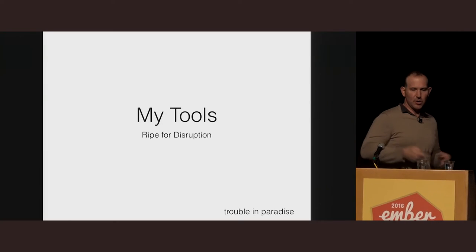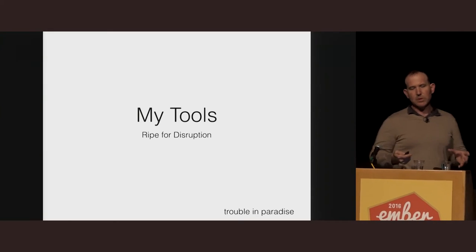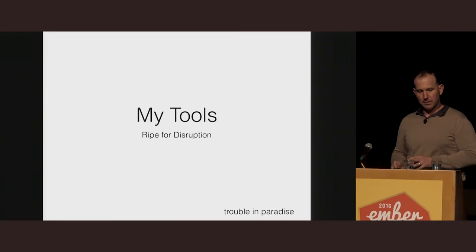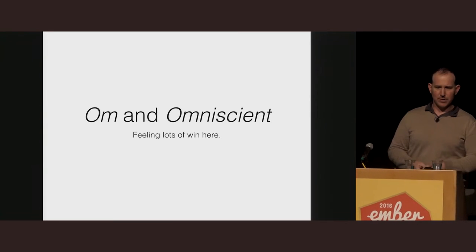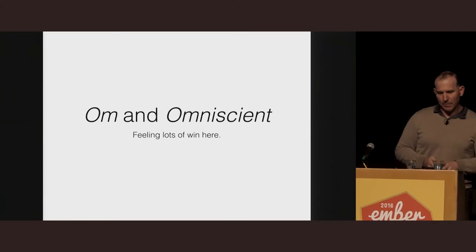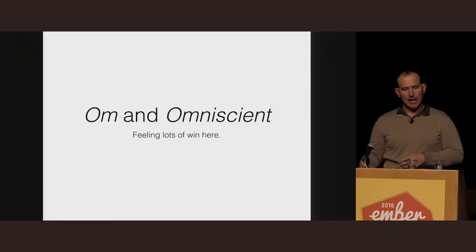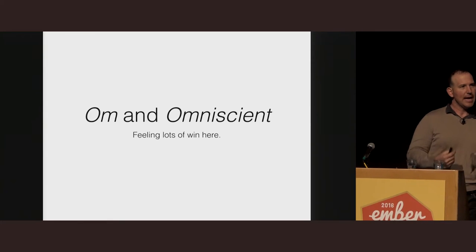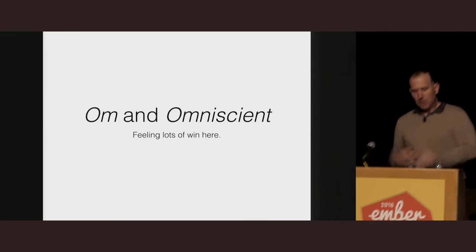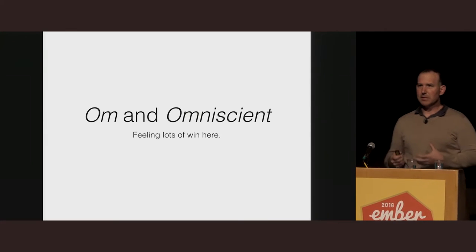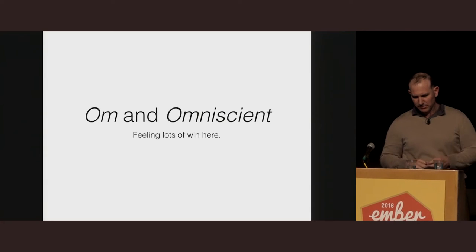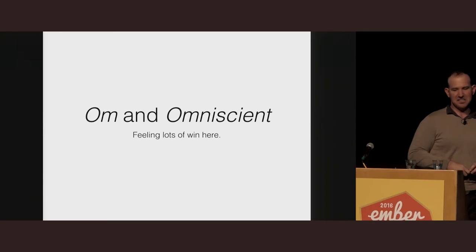So again, I went looking for alternate approaches, and I spent most of the time with two frameworks — one called OM and one called Omniscient. These were React-based frameworks, but the fact that they used React was literally the least interesting thing to me. What really set them apart and intrigued me most was their unique take on application state. They were able to solve many of the problems that I was having very neatly, and the things that were gumming up my Ember code just seemed to fall away.